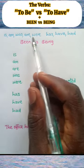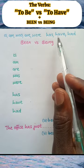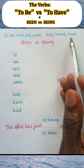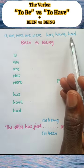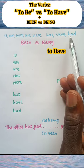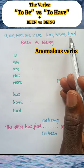And on the right hand side we have the second set which consists of has, have, had. These also are primary auxiliary verbs. They belong to the category known as the verbs to have or the anomalous verbs.